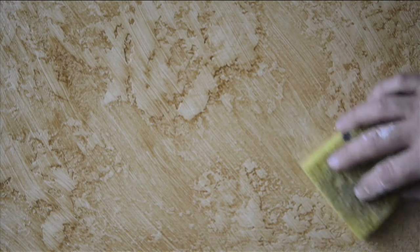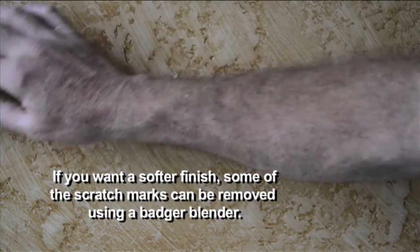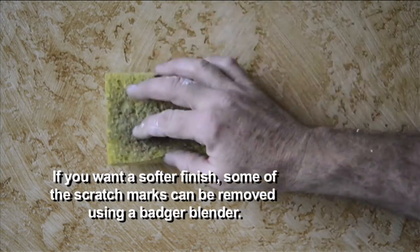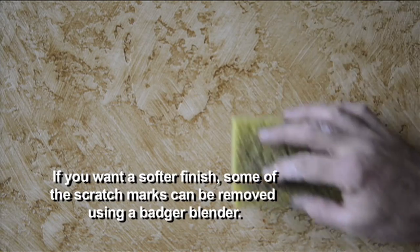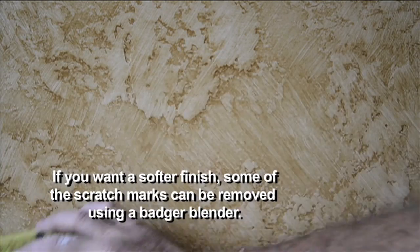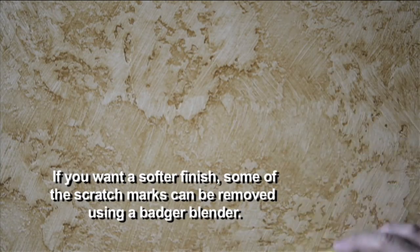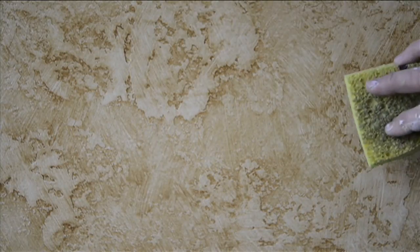If you wanted an even softer finish, some of the scratch marks created by the sponge could be removed easily with a badger or blender. So this is for a little higher contrast finish. If you accidentally remove too much of the glaze, you can go back and repair areas with the brush.